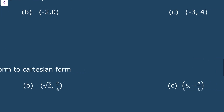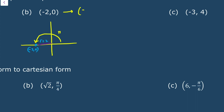Next, for the point (-2, 0), which lies on the negative x-axis, r equals the modulus of -2, so r equals 2. The angle anticlockwise from the initial line is pi. So in polar form, this is (2, pi).